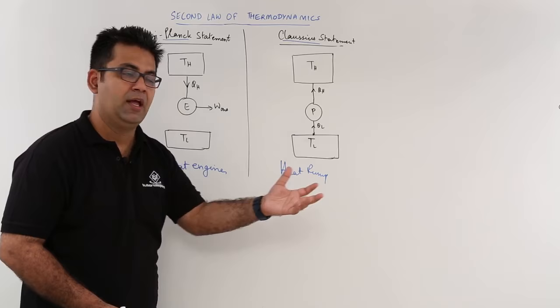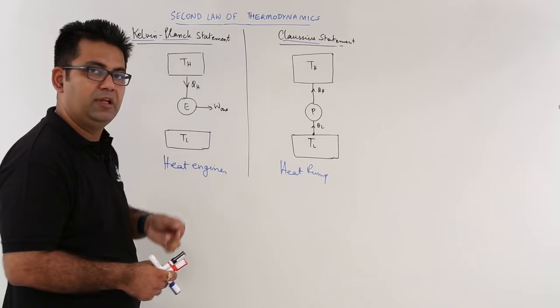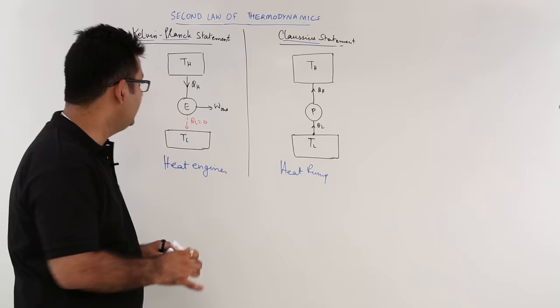Now, as per the Kelvin-Planck statement, it says that there is no such engine which converts an equal amount of work output equal to the amount of heat input. Or you can say that you cannot have any engine possible in the universe which has zero heat rejection. This is not possible.